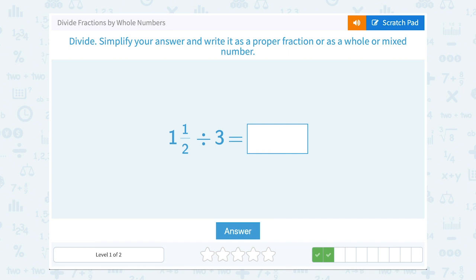1 and 1 half divided by 3. When you are working with fractions, when you're multiplying and dividing, it's usually easier to rewrite your mixed number as an improper fraction. So when we do that, the easiest way to do that is to say, well, 1 times 2 is 2.